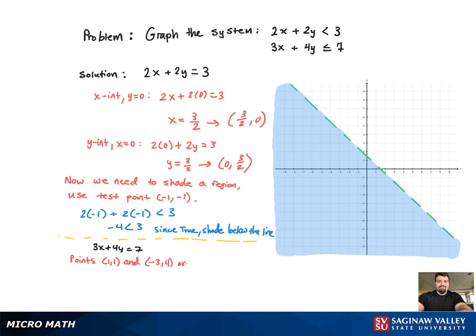And then with negative 3, 4, you get the same situation. So those two points are on the line. So we can just graph it with those two points. And it's going to be a solid line because this one has less than or equal to for the symbol.